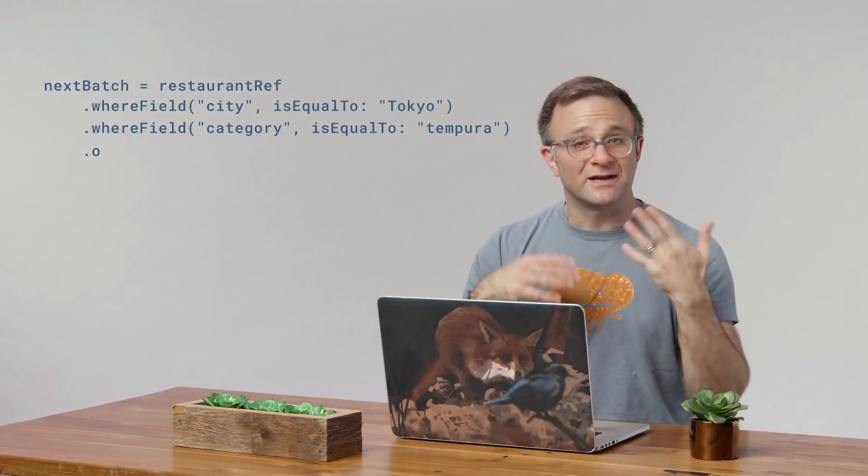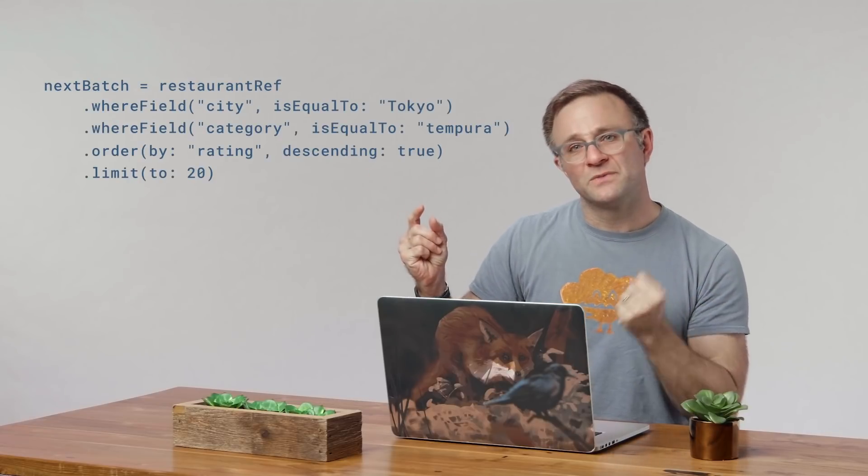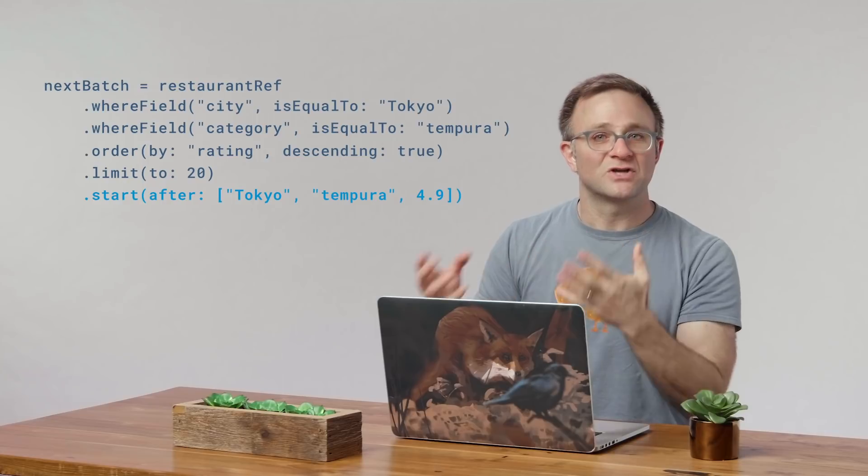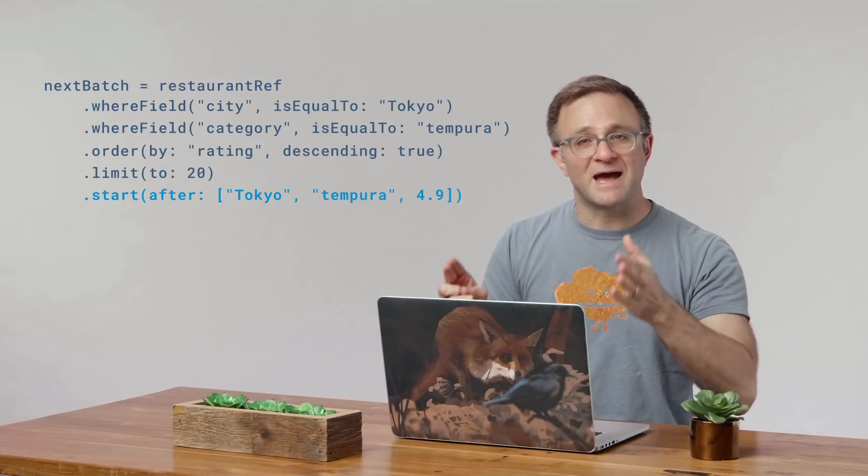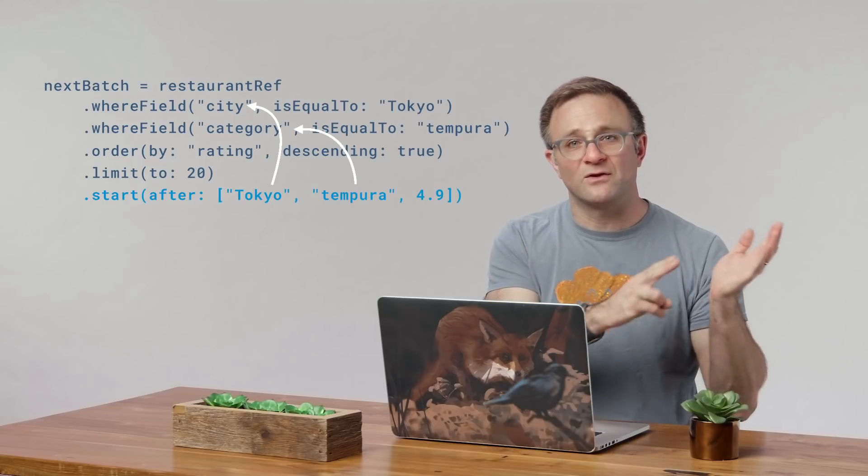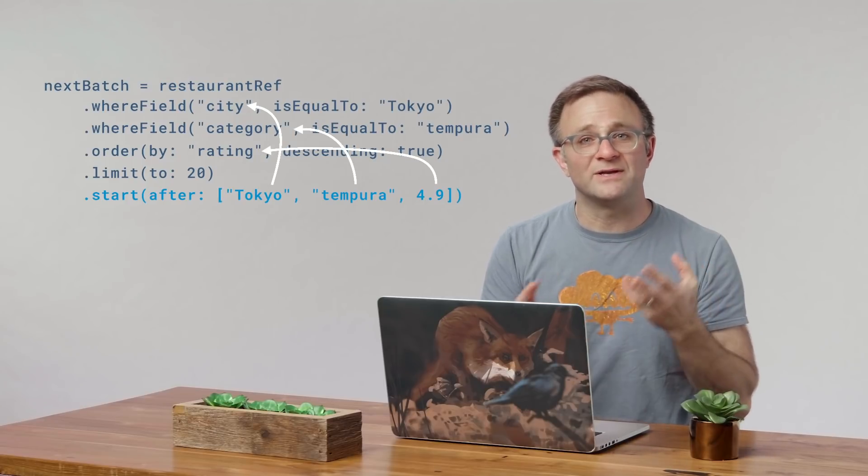So we can start by generating a new query from scratch like so, but then add a start after method. Now, with the start after method, I can pass in an array of values to use where, if they match up with the fields in my query in the right order, Cloud Firestore will grab the next document from the appropriate spot in the index. Now, this call would work for fetching the next 20 documents in my query, but there are two ways I can make this a whole lot easier to implement.